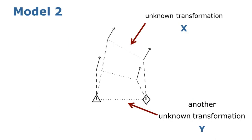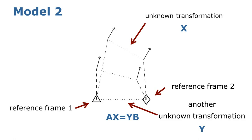To alleviate this, we can introduce another unknown transformation called Y, and allow the sensors to work on separated reference frames. This leads us to the second model, with the equation Ax equals YB.